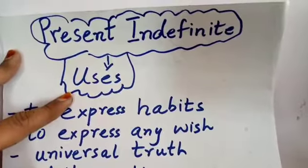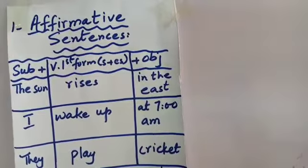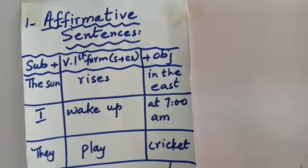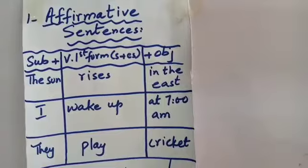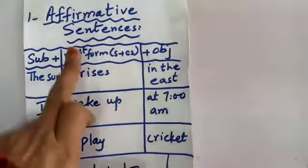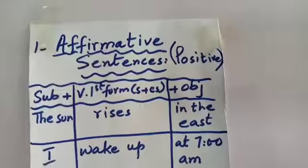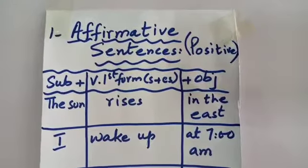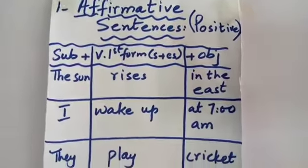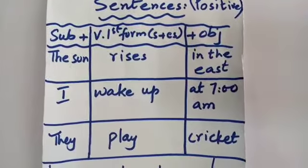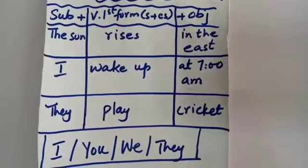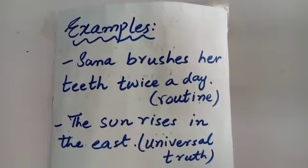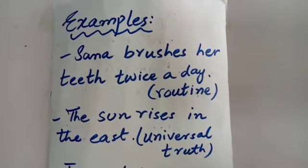Grade 3, there are different types of sentences — affirmative, negative, interrogative and more — but today we will focus on affirmative sentences. Affirmative sentences are positive sentences where 'not' is not used and there is no question at the end — they always end with a full stop.